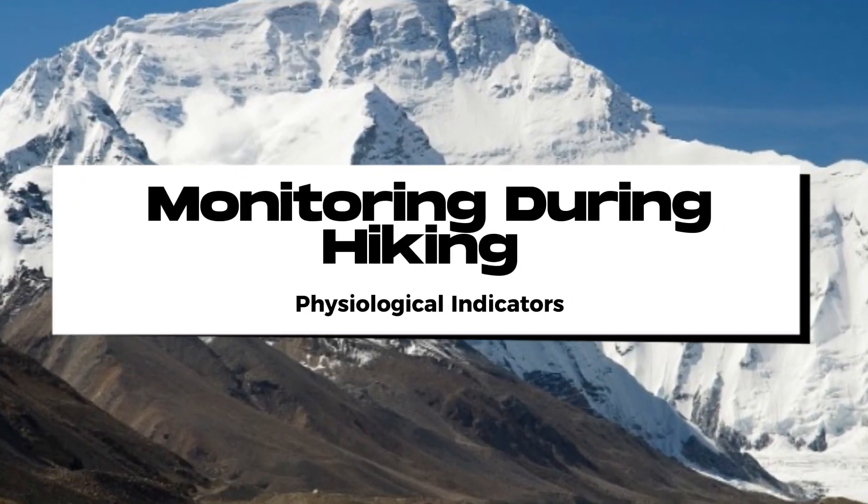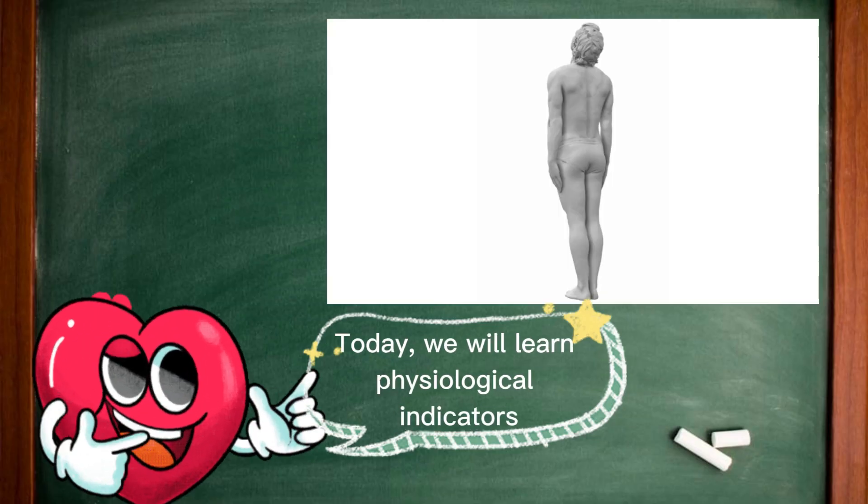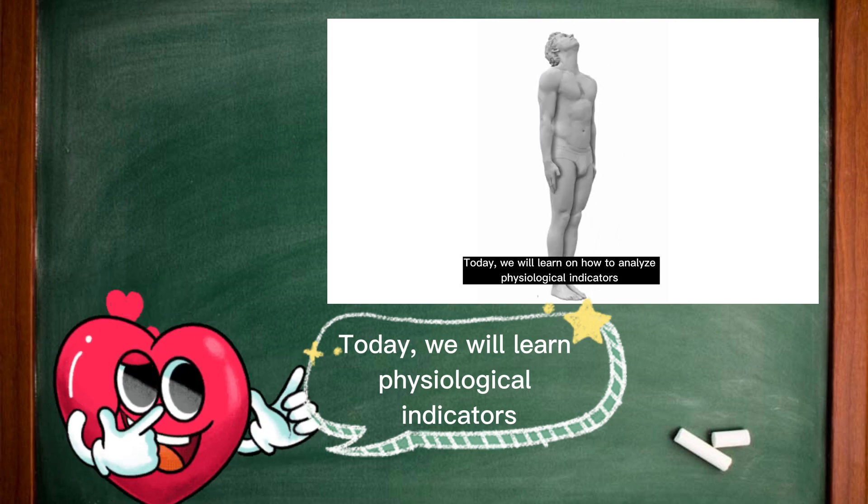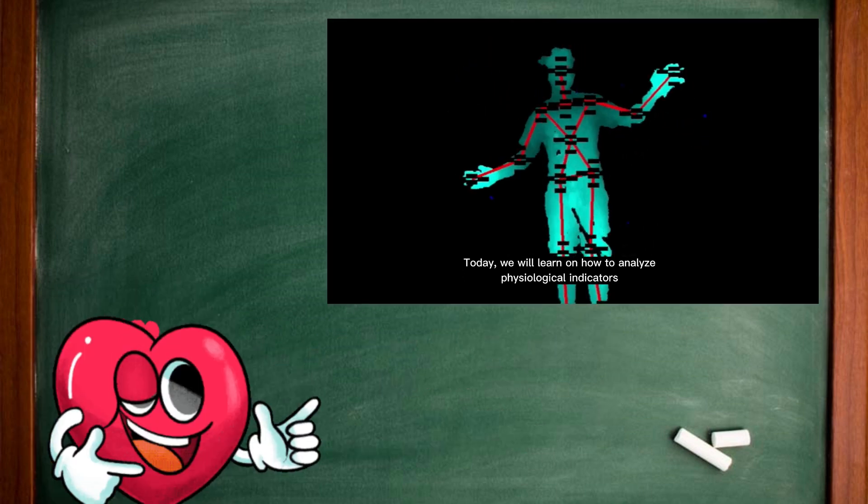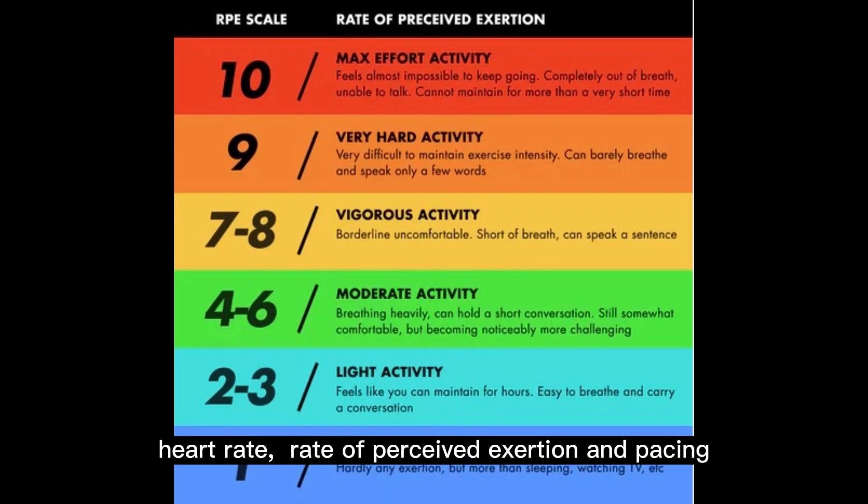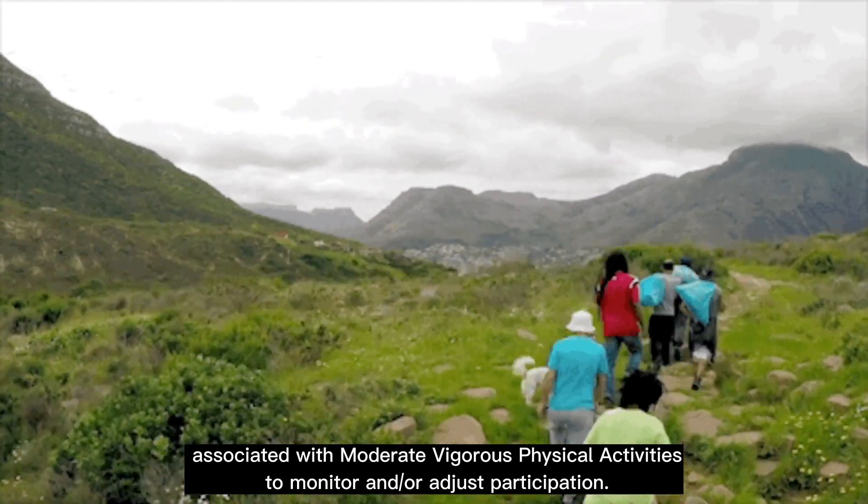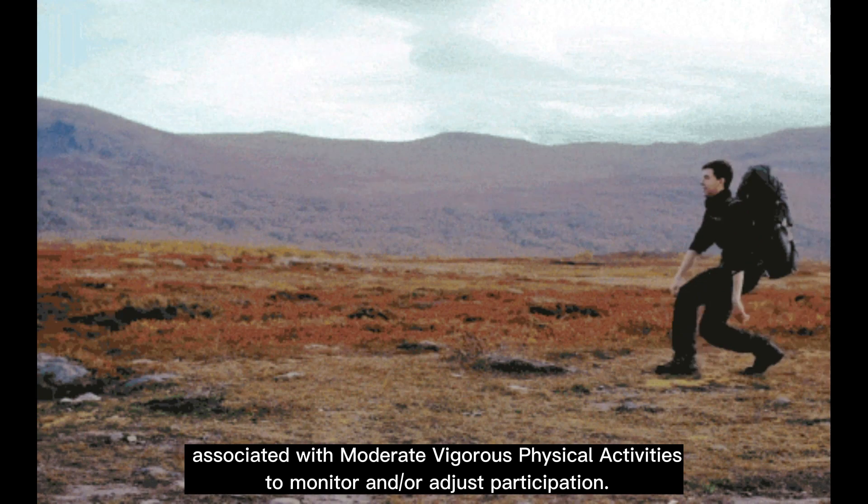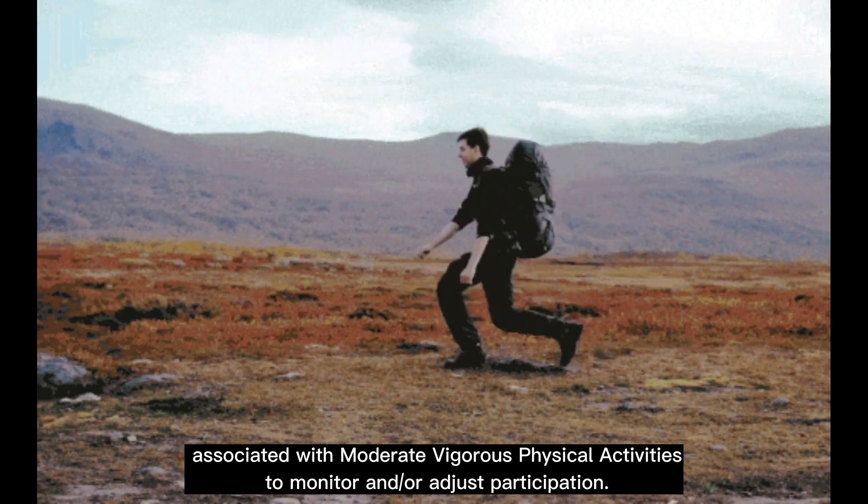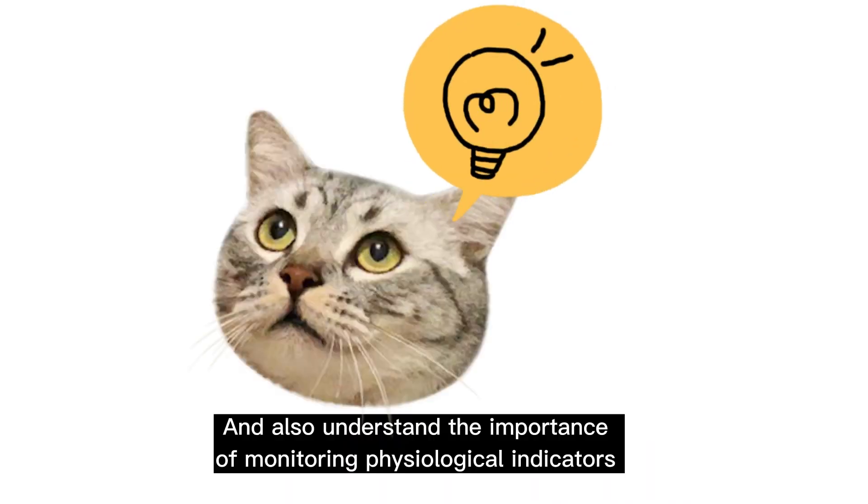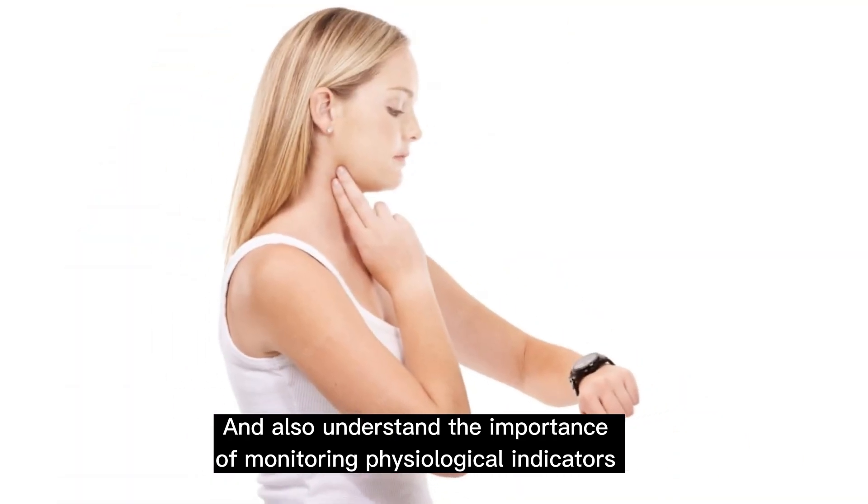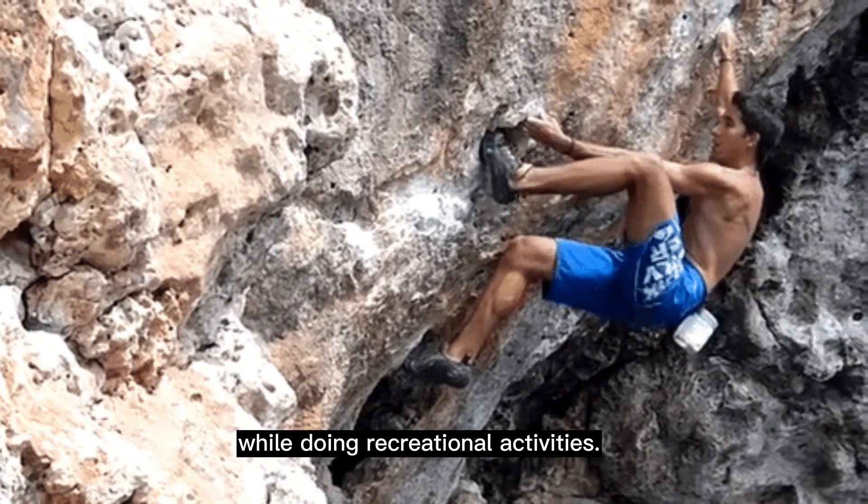Physiological indicators as a tool for monitoring during hiking. Today we will learn how to analyze physiological indicators such as heart rate, rate of perceived exertion, and pacing associated with moderate to vigorous physical activities to monitor and adjust participation, and also understand the importance of monitoring physiological indicators while doing recreational activities.